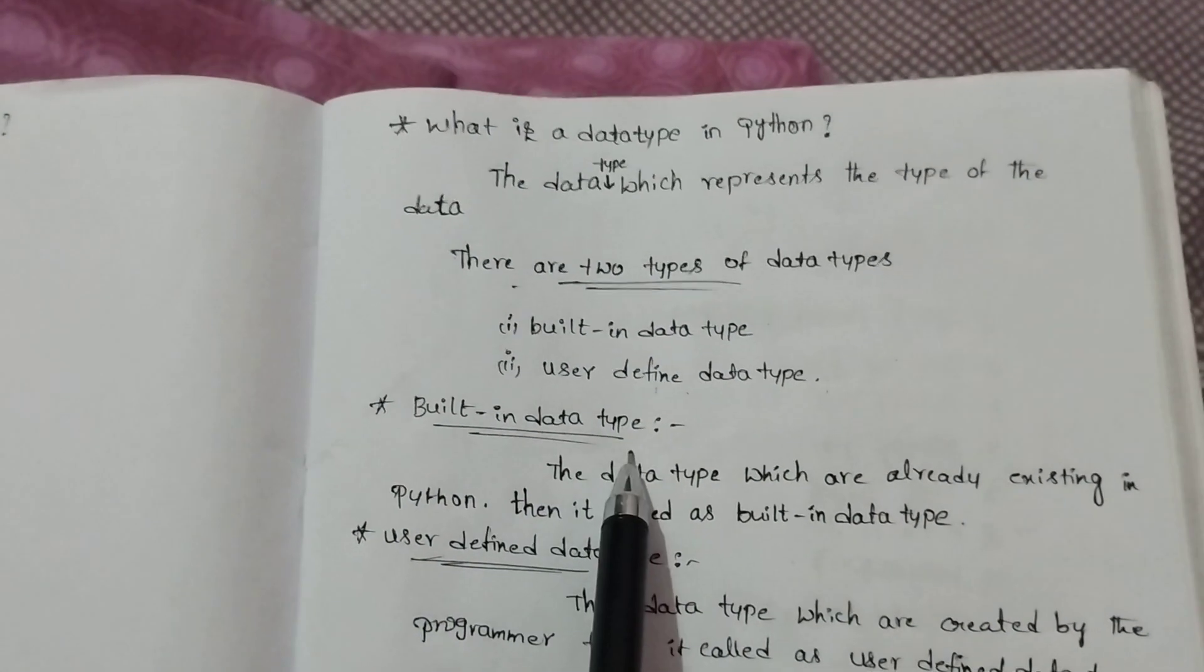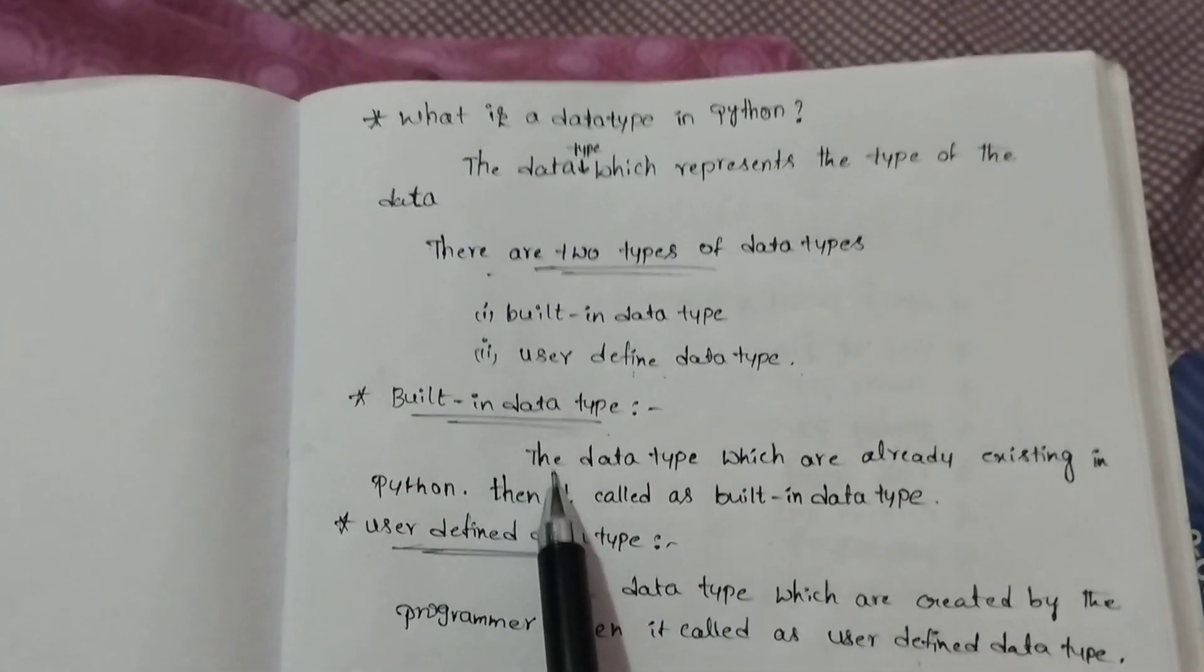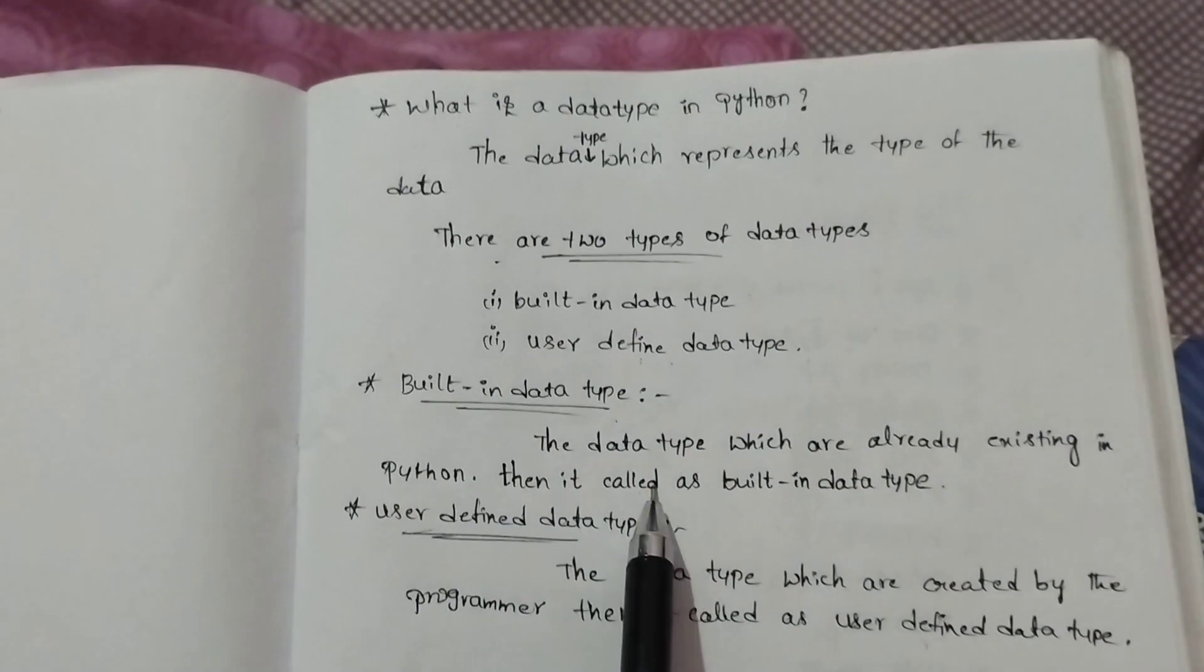Built-in data type means the data type which already exists in Python. Then it is called as built-in data type.